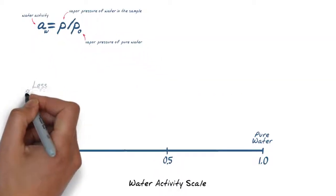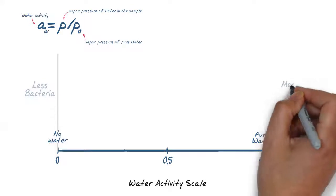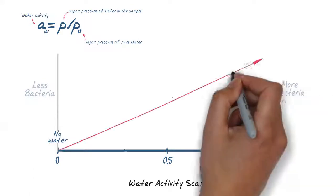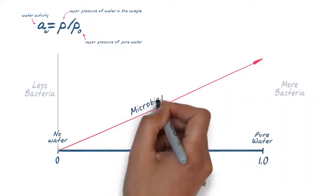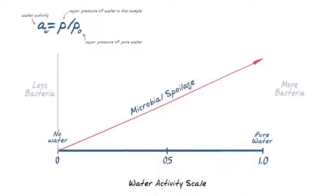In other words, the more unbound water we have, the more likelihood we have of microbial spoilage. Unbound water will exert vapor pressure which can be used to determine microbial spoilage, chemical, and physical stability.